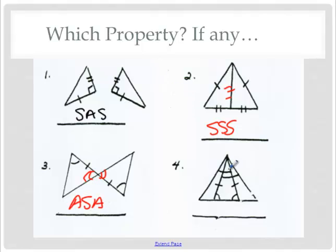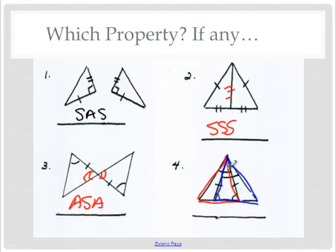The hardest part about number four is knowing which triangles we're actually looking at. The triangles we're looking at are these two overlapping ones — the one in red and the one in blue. In red and blue, the angle on the top is congruent, these sides are congruent, and these angles are congruent. So it follows angle, side, angle.